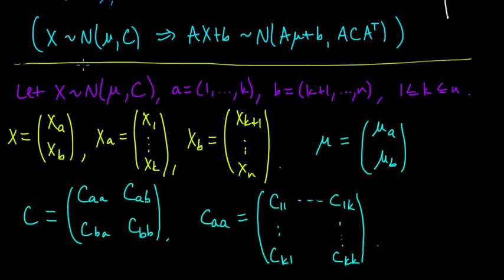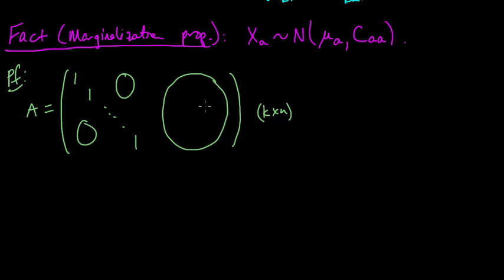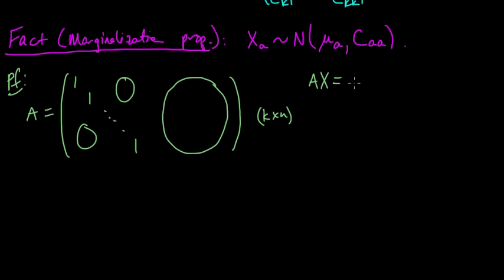So the projection matrix doesn't even have to be that big. We're going to take the K by N projection matrix that's the identity looking thing here in the first K by K block, and then it's zero everywhere else. So this is a K by N matrix. Then let's see what the affine property tells us. The affine property told us that if X was normal, and it is here with the same parameters even, then AX has the distribution. So if we multiply A and X, then this, just by construction, this is just XA.